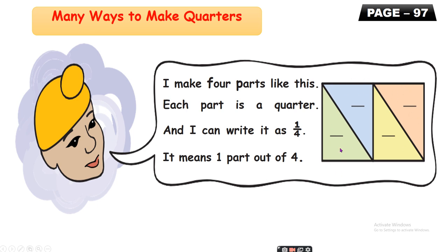You can see this rectangle has been cut into four equal parts by this child. This child cut out four equal parts, and one part is written like this: one upon four, one upon four, one upon four, and one upon four. One upon four means quarter.